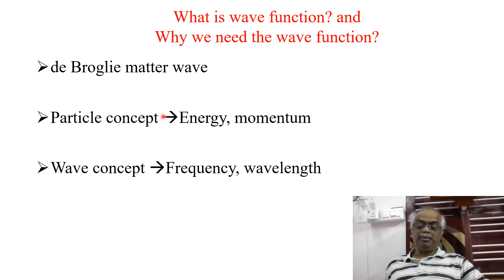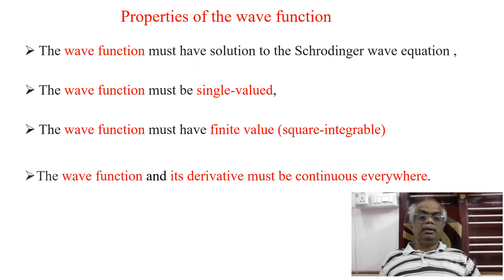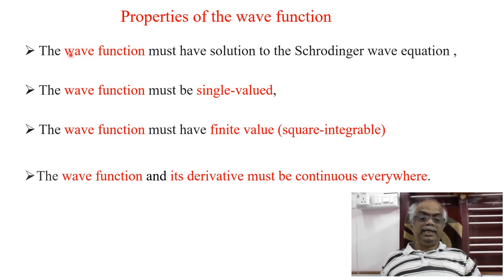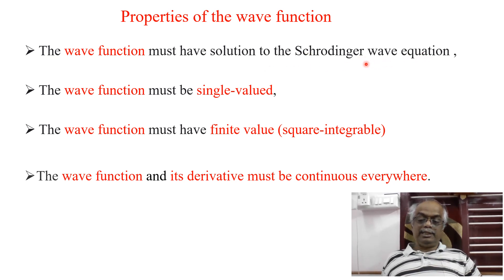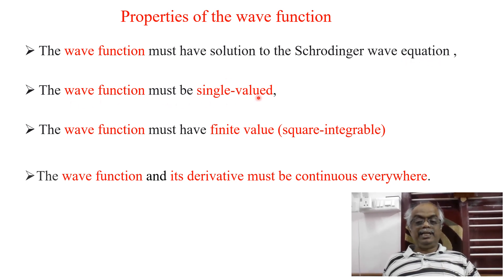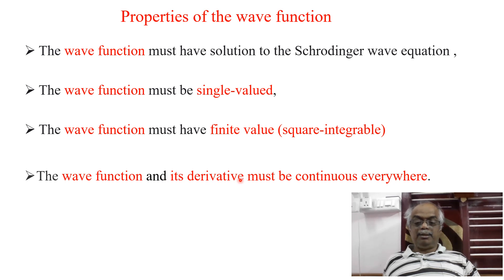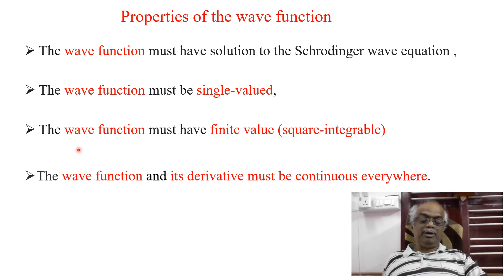We will see what are the properties of wave function and how it is used. The following are the important properties of wave function. The wave function must have a solution to the Schrödinger wave equation. The wave function must be single-valued and must have a finite value — that is, it must be square integrable. The wave function and its derivative must be continuous everywhere. These are the very important properties of wave function.